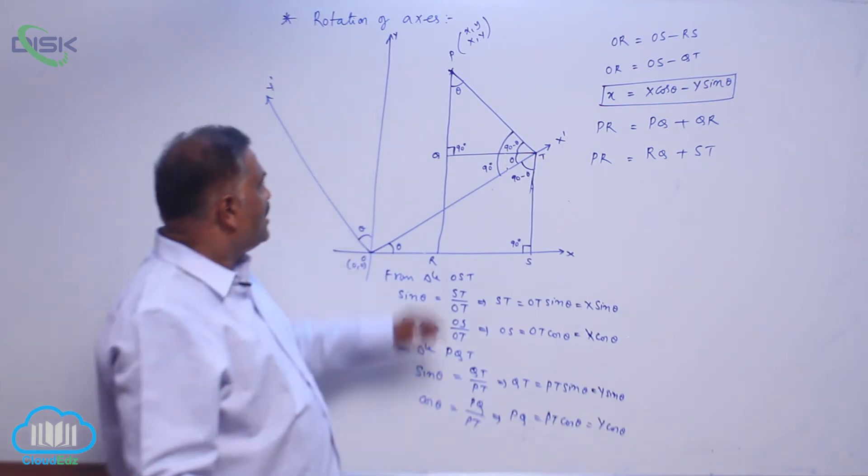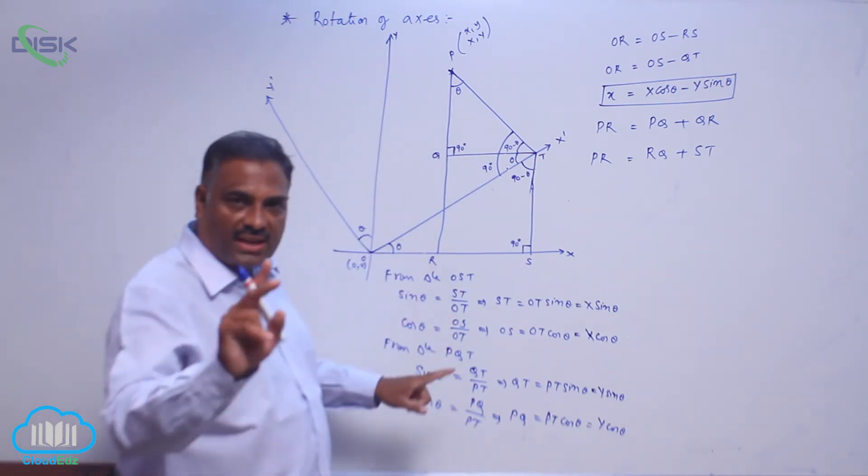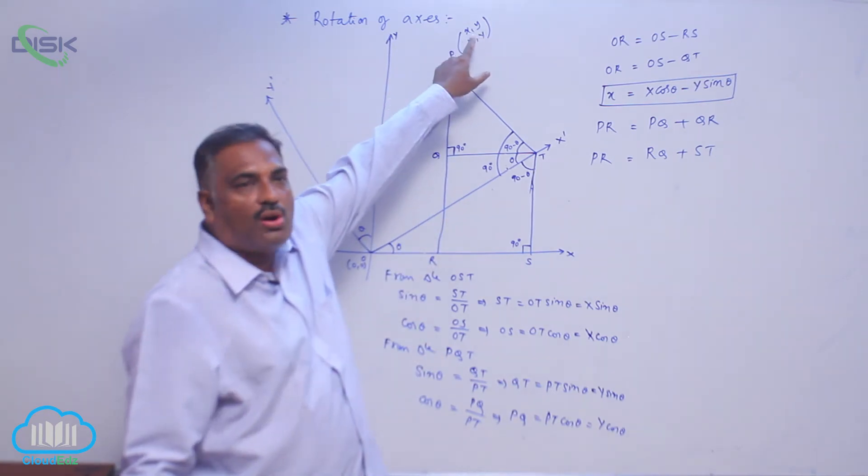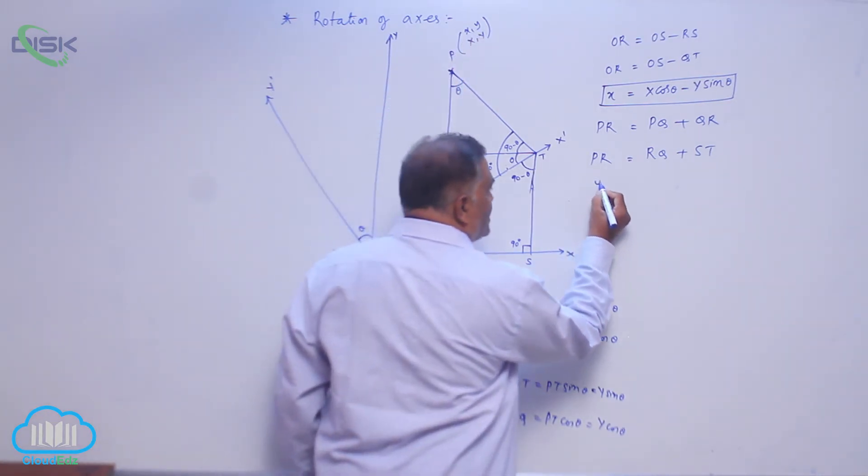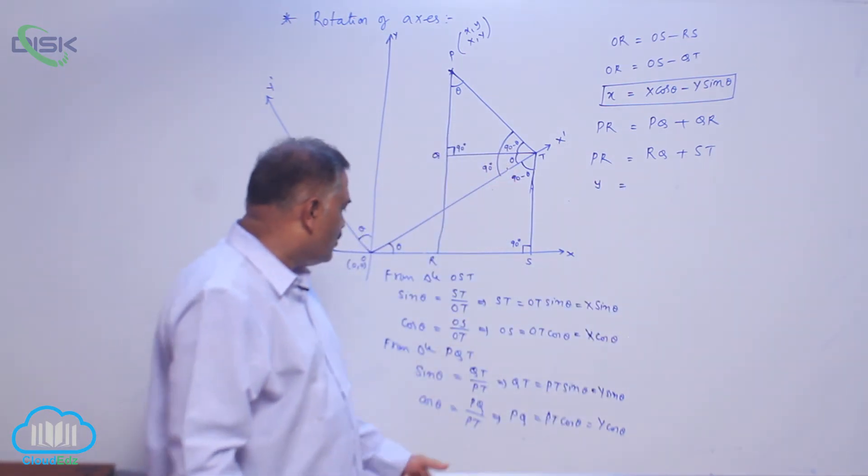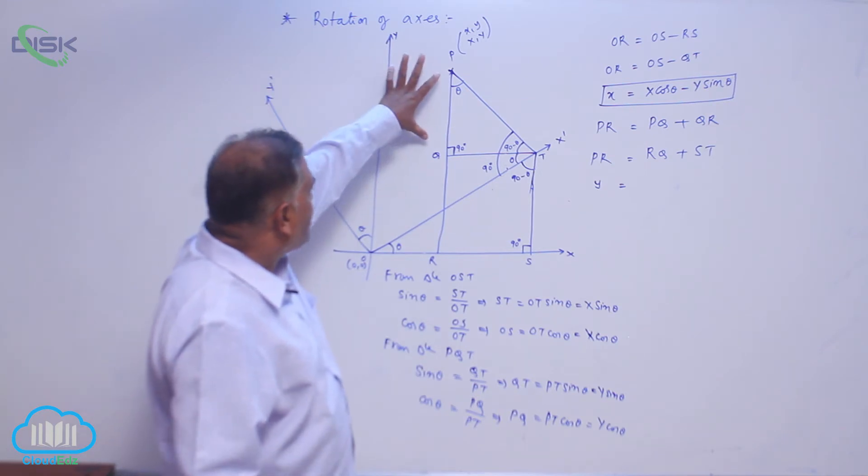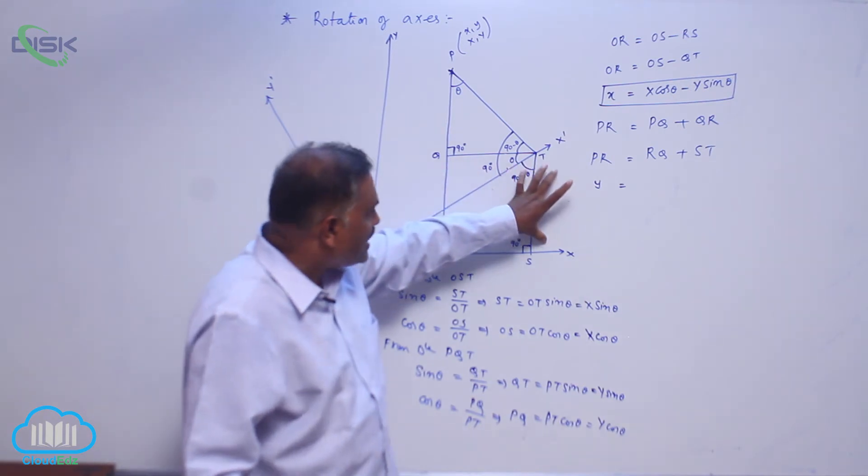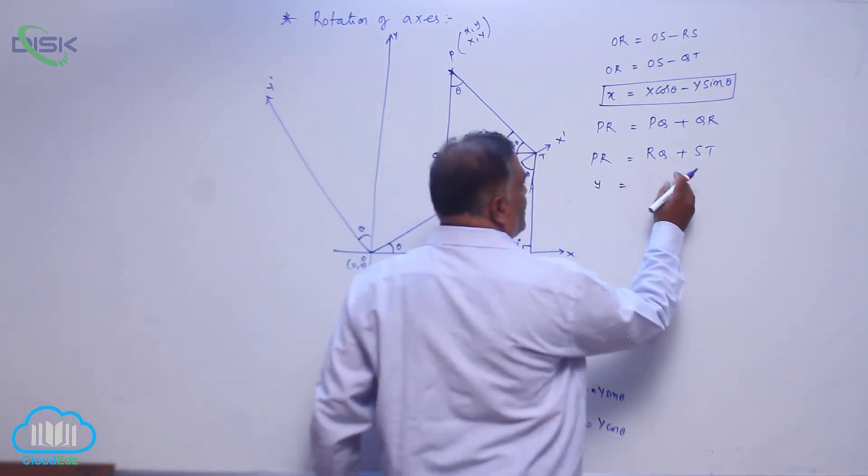Now you observe PR is the vertical distance onto the old axis that refers to old Y coordinate, that is Y equals RQ. Already we know the value of RQ. You check once, RQ is this one, this is equivalent to ST. So RQ is nothing but—